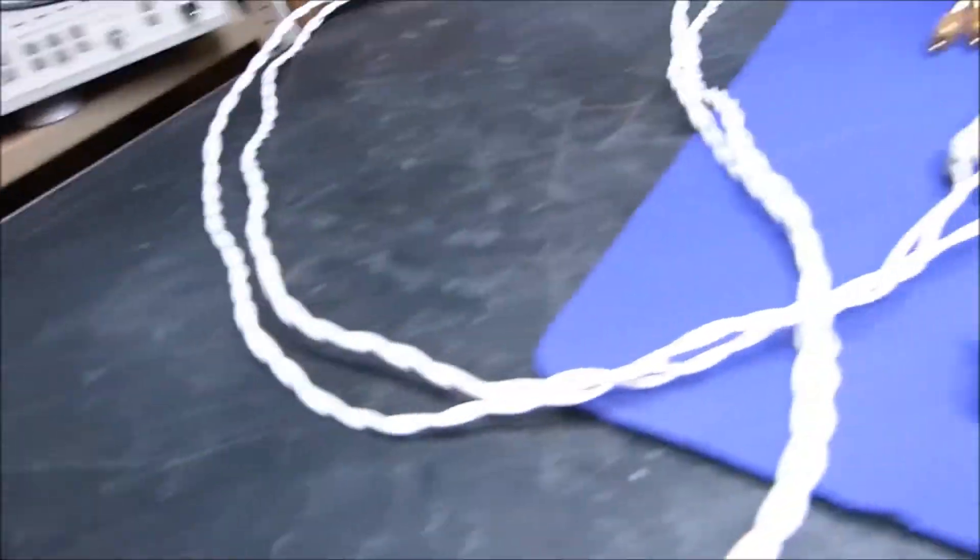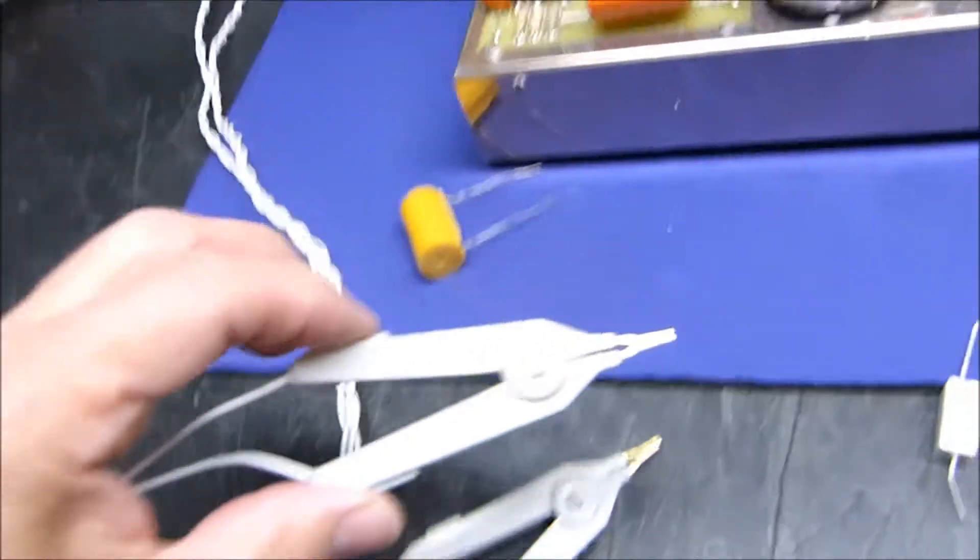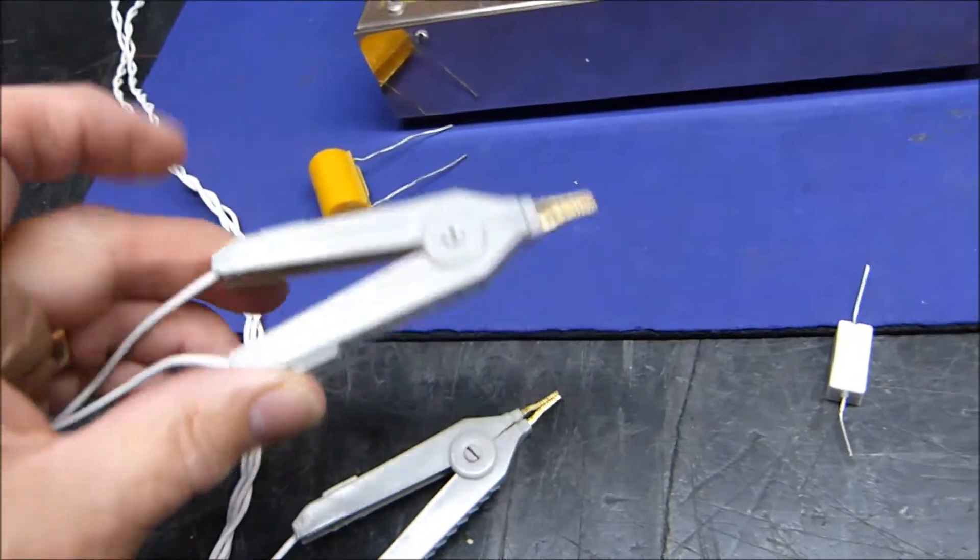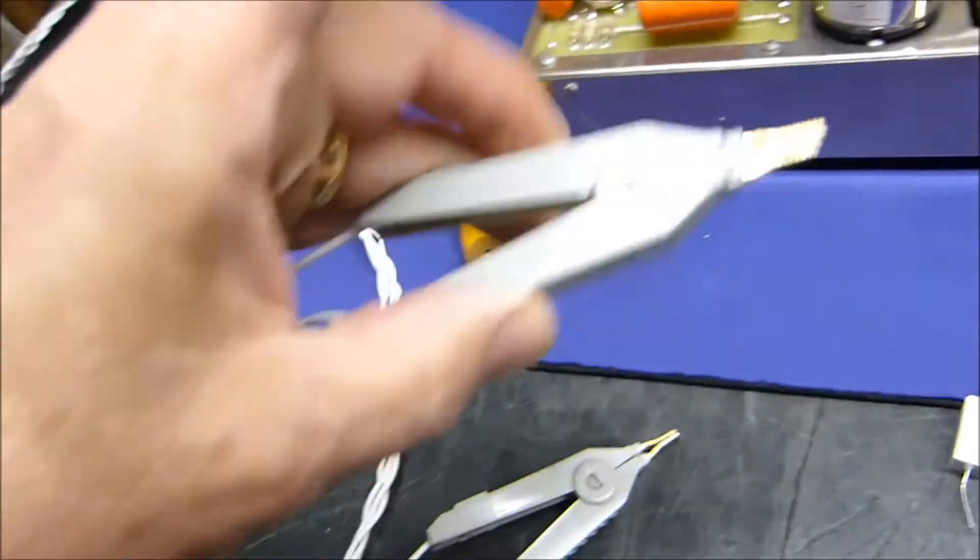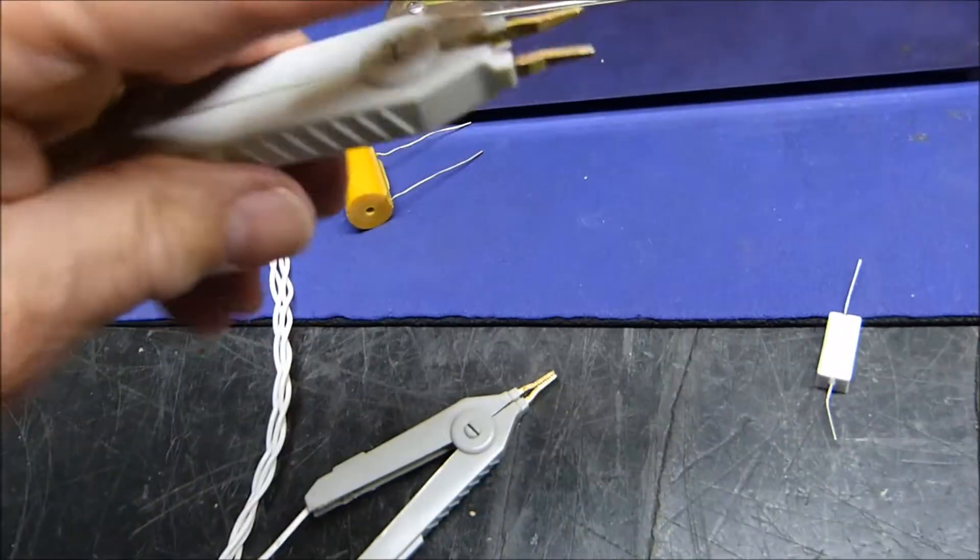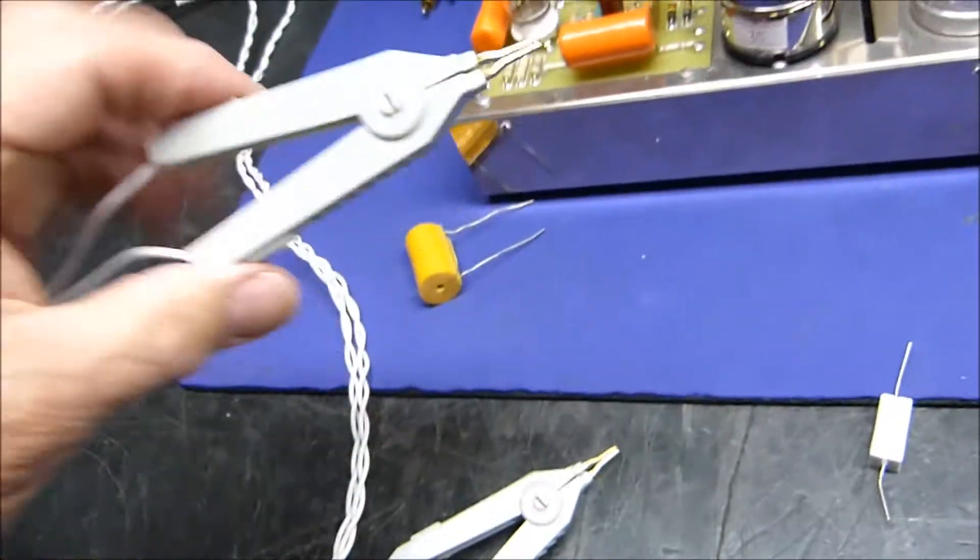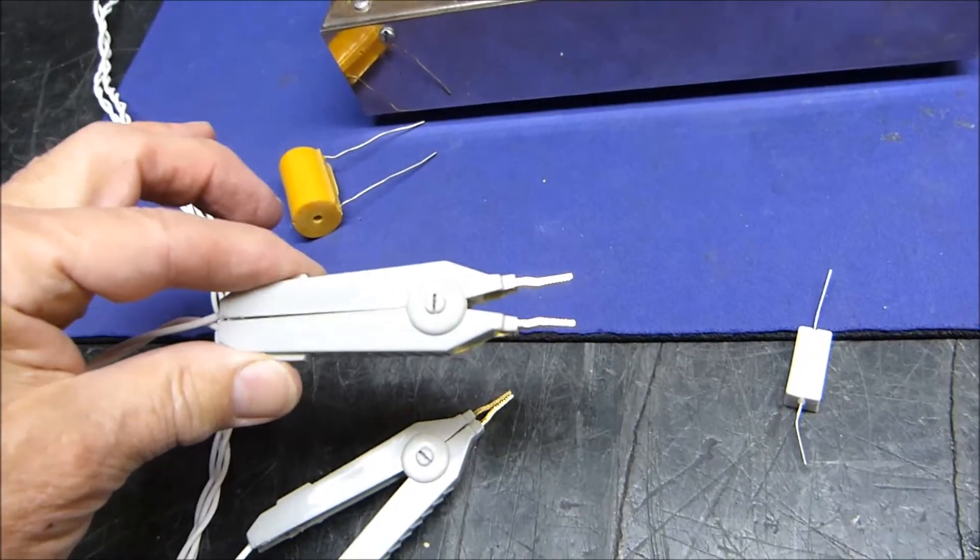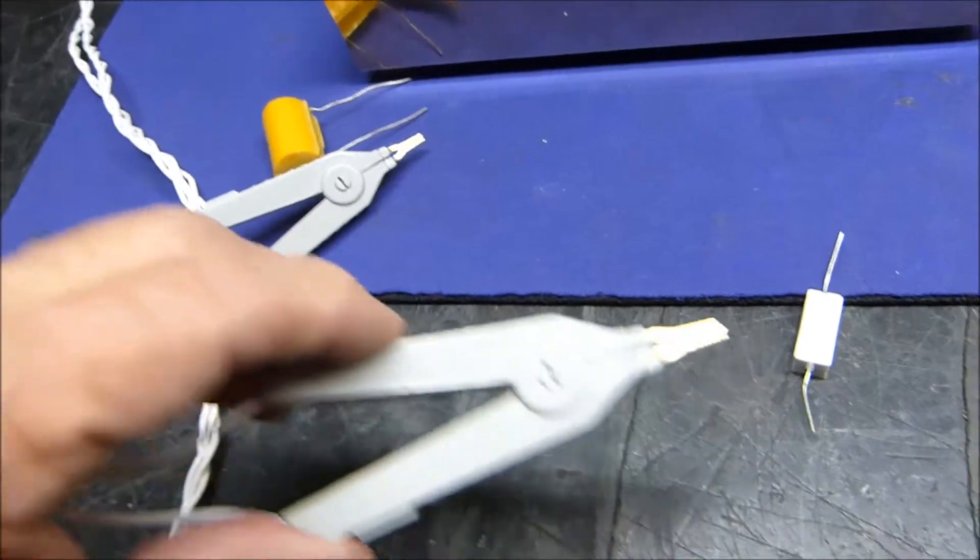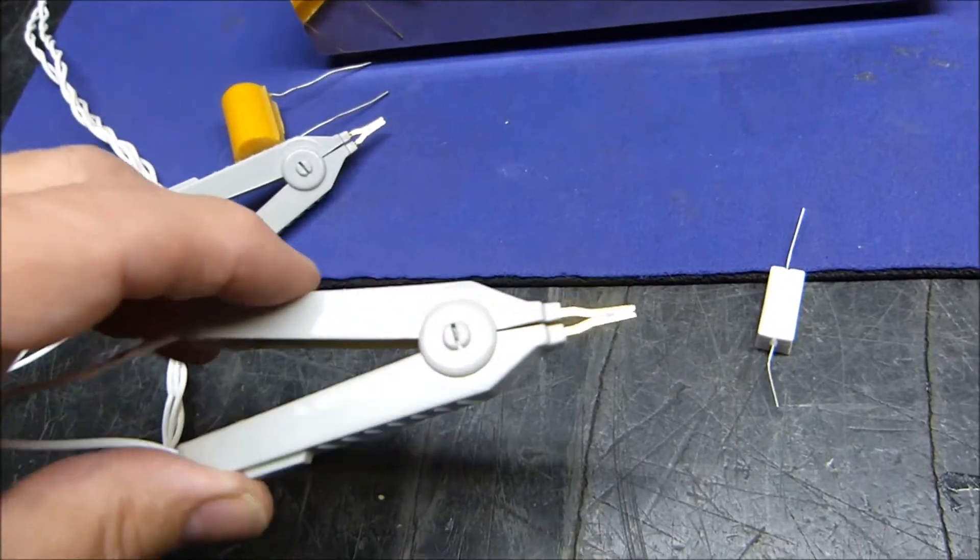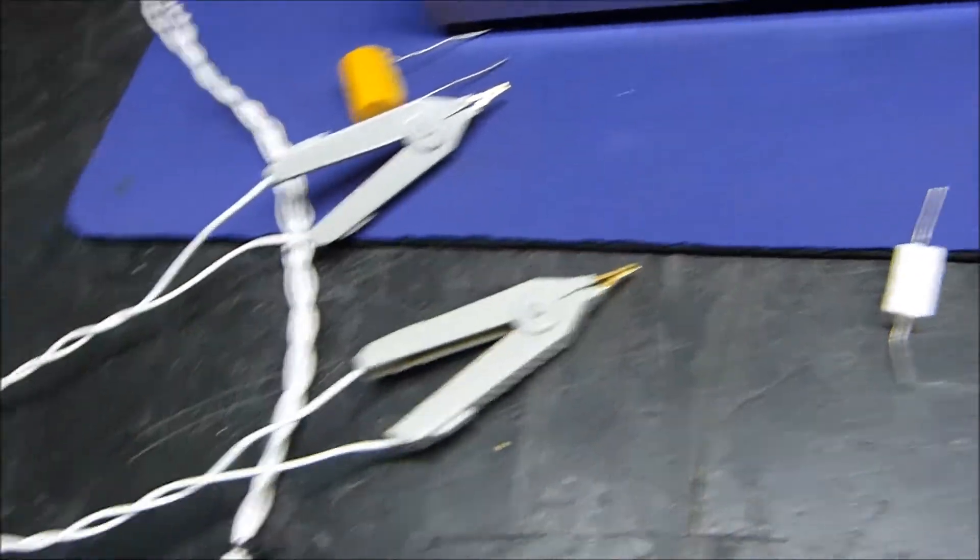When you get just slightly fancier, you use these things they call Kelvin clips. This wire is hooked to only this side, and the bottom wire is only to this side. One of these clips goes to the two negative leads, and this one goes to the two positive leads.